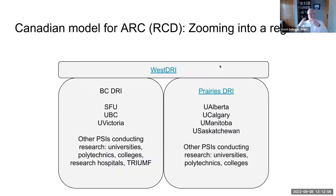Zooming into our western region, there are research computing staff and research data management staff at the listed institutions. In BC, that would be Simon Fraser, UBC, and the University of Victoria. On the Prairies, that would be the University of Alberta, University of Calgary, University of Manitoba, and the University of Saskatchewan. But researchers also exist at other universities, polytechnics, colleges, research hospitals, and in the case of BC, TRIUMF, which is a particle physics effort.